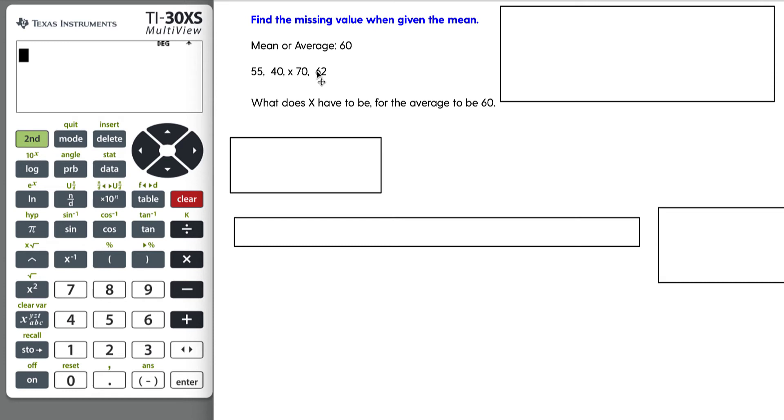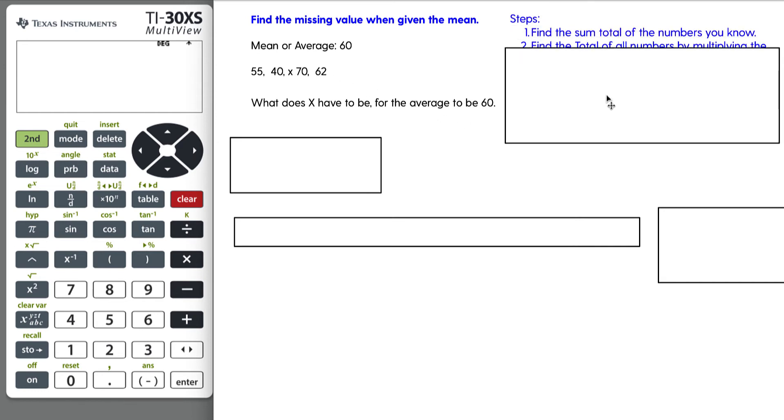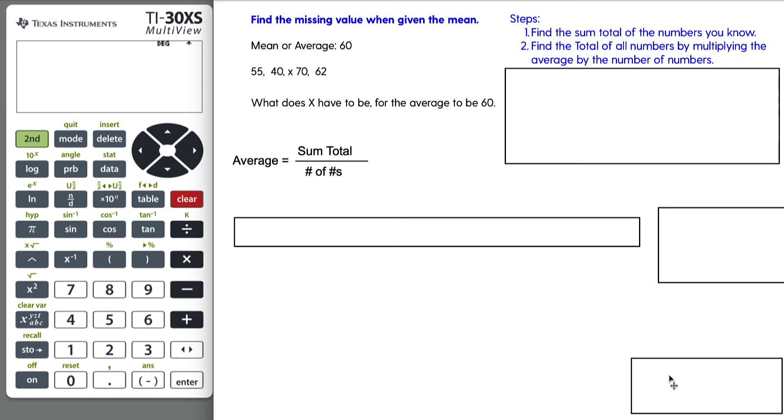Well, if it's multiple choice, you could plug in the numbers and work backwards. I'm actually not going to show that because I rarely see that on any sort of GED test item. So here's some of the basics. Step one, find the sum total of the numbers you know. And then step two, find the total of all numbers by multiplying the average by the number of numbers.